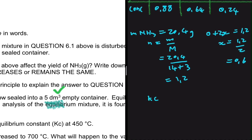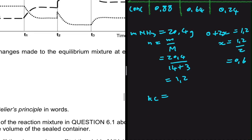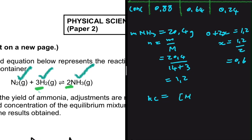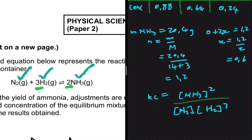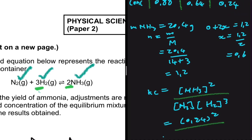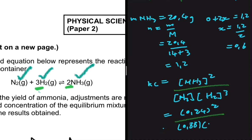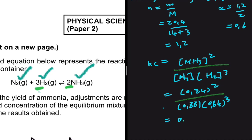Now we can say Kc equals the concentration of products divided by reactants. Based on the equation: Kc equals the concentration of NH₃ squared, divided by the concentration of N₂ multiplied by the concentration of H₂ to the power 3 — due to the balancing coefficients. This equals (0.24)² divided by (0.88) × (0.64)³. Putting that in the calculator gives a Kc value of 0.25.